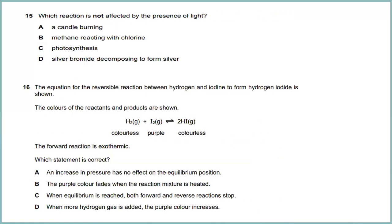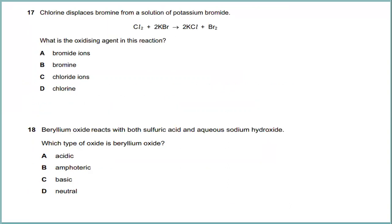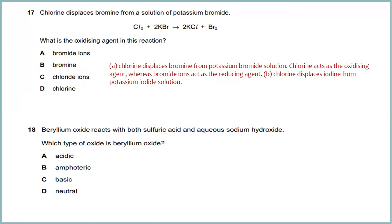Question fifteen: the reaction is not affected by the presence of light. The equation for the reversible reaction between hydrogen and iodine to form hydrogen iodide is shown; the forward reaction is exothermic. The correct statement is that an increase in pressure has no effect on the equilibrium position. Question seventeen: chlorine displaces bromide from a solution of potassium bromide. Chlorine acts as the oxidizing agent, while the bromide ion acts as the reducing agent.